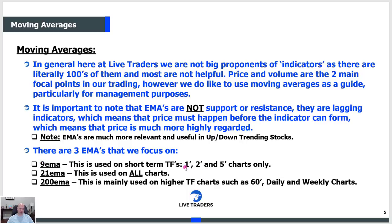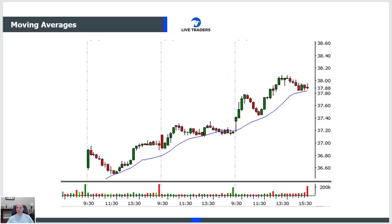9 EMAs are used on short timeframes — one minute, two minute, five minute charts only. The 21 EMA can be used on all charts, and if you want to use the 20 EMA or 10 EMA, that's fine. The 200 is mainly used on 60-minute, daily, and weekly charts. To be honest, this is the one that's really important. This is what hedge funds and money managers use — big EMAs on big timeframes. Most of those guys are looking at dailies, weeklies, monthlies, and they'll put a 200 MA on that.